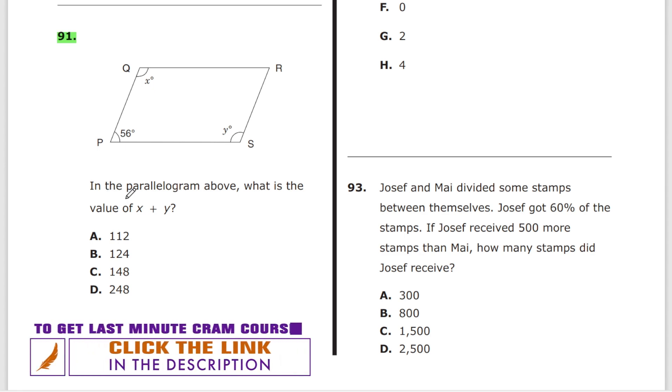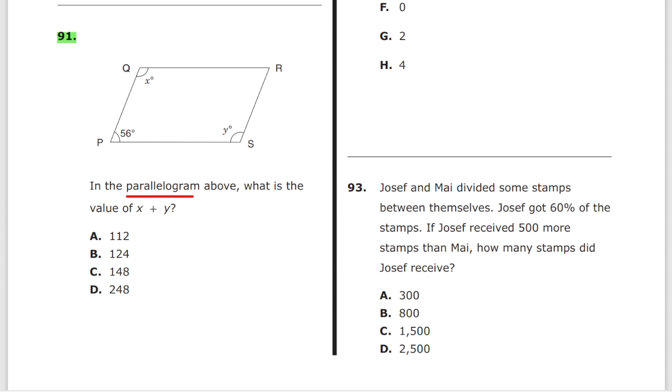so fast? The key is understanding parallelograms. What do we know about parallelograms? Two things: first, these two angles together equal 180 degrees. Second, these two angles are congruent. So x plus 56 equals